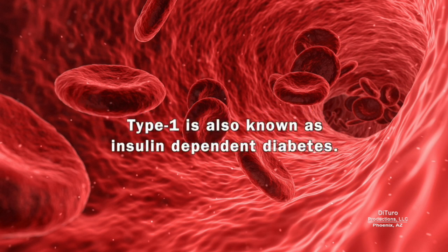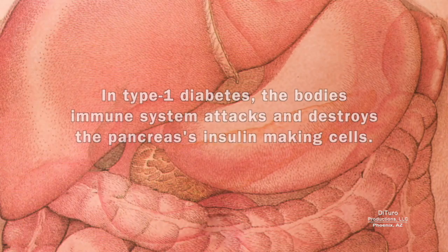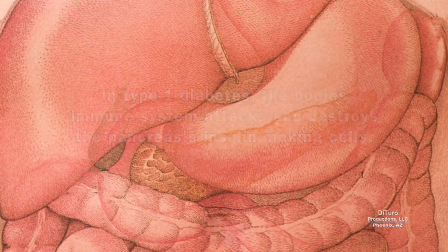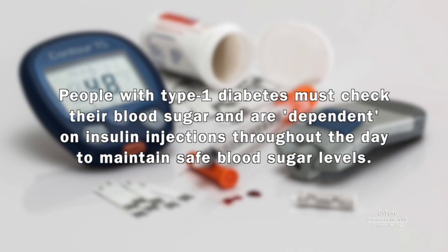There are two types of diabetes: type 1 and type 2. Type 1 is also known as insulin-dependent diabetes. In type 1 diabetes, the body's immune system attacks and destroys the pancreas's insulin-making cells. People with type 1 diabetes must check their blood sugar and are dependent on insulin injections throughout the day to maintain safe blood sugar levels.